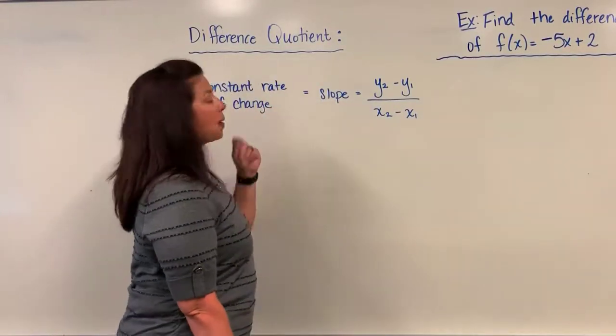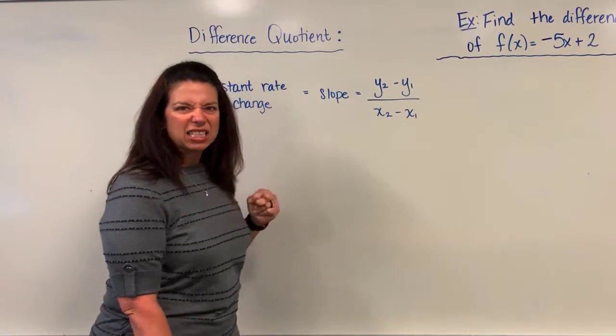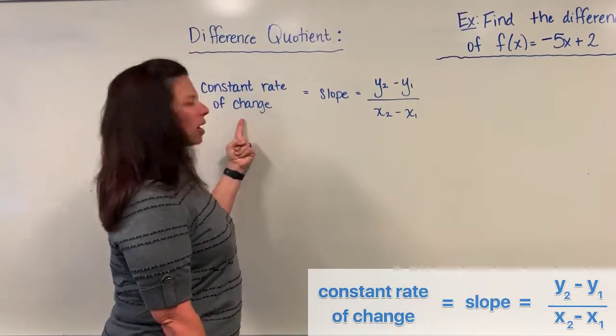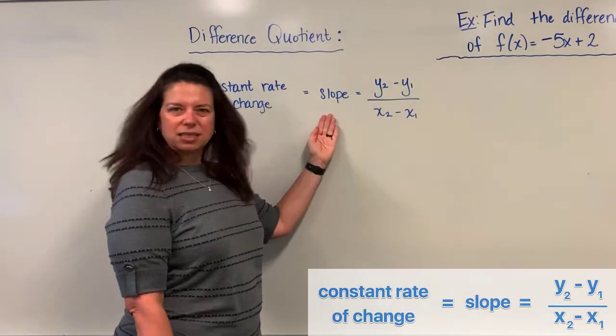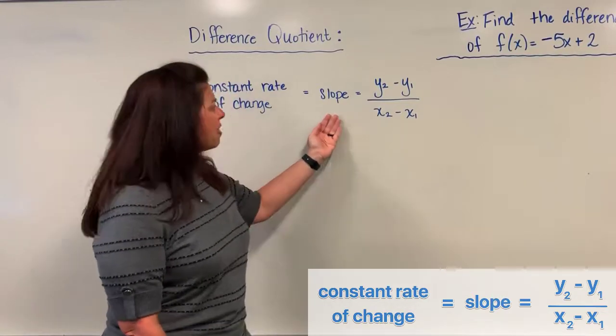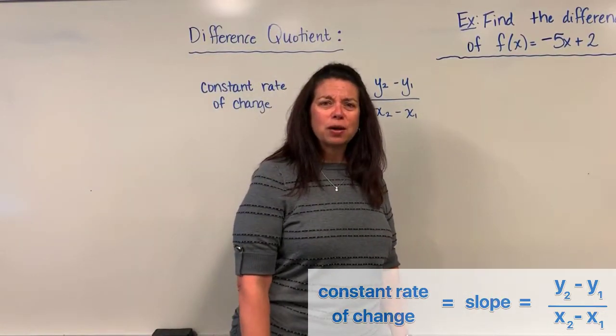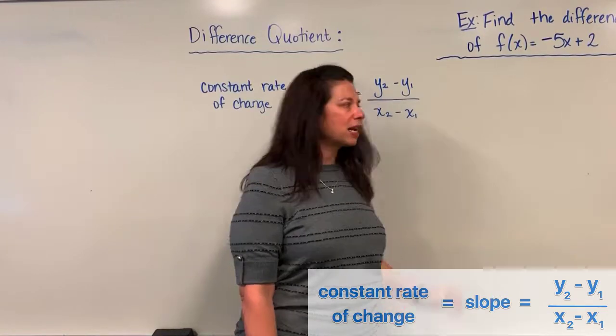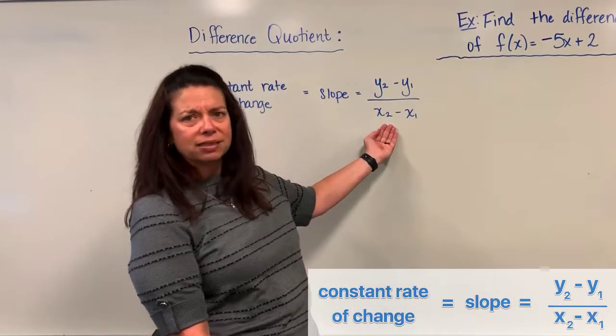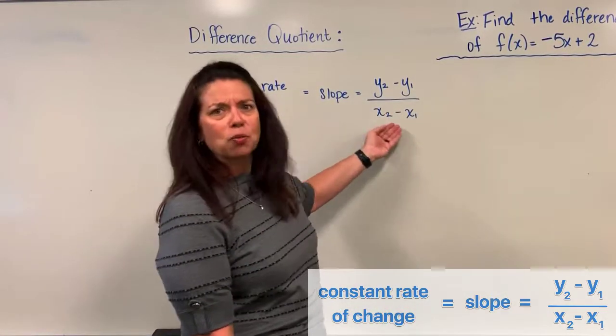So just a reminder about things related to constant rate of change. When we think about constant rate of change, that's really the same thing as slope, and that's really the same thing as this formula: y2 minus y1 divided by x2 minus x1 when we have a couple of points that we're trying to find the slope of.